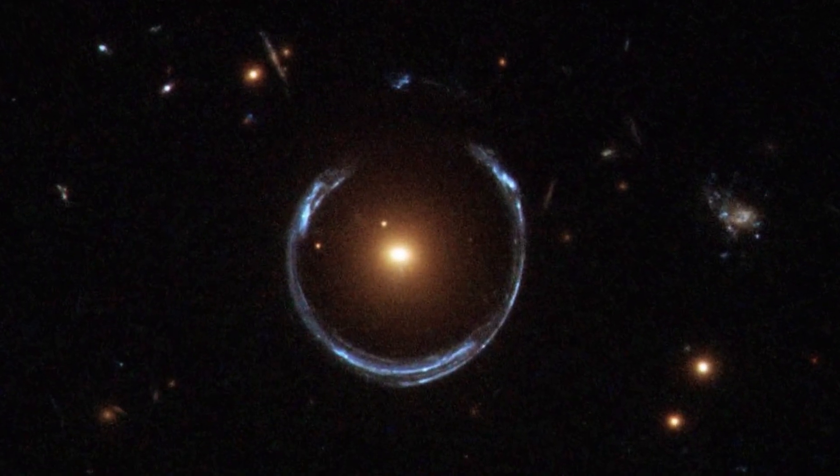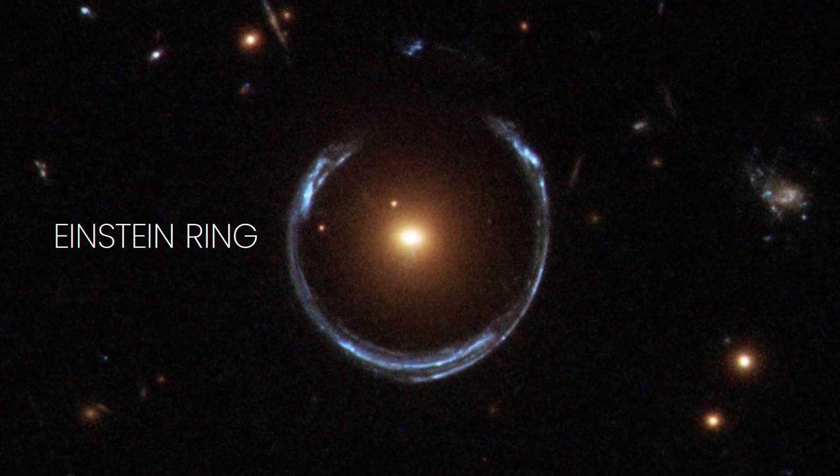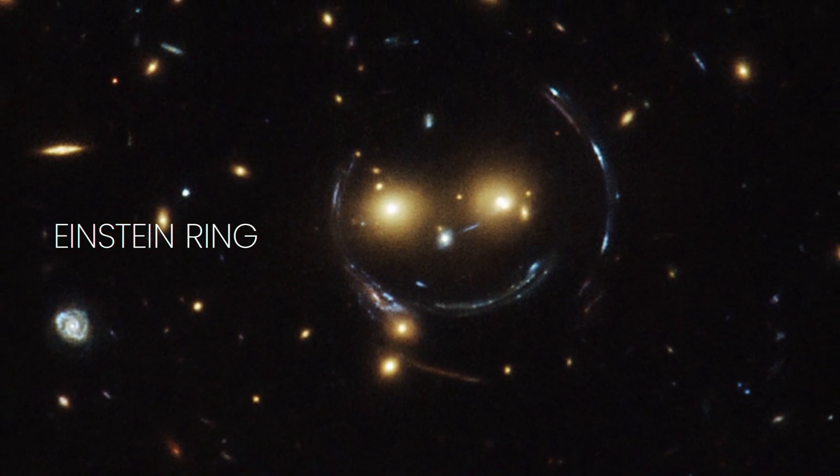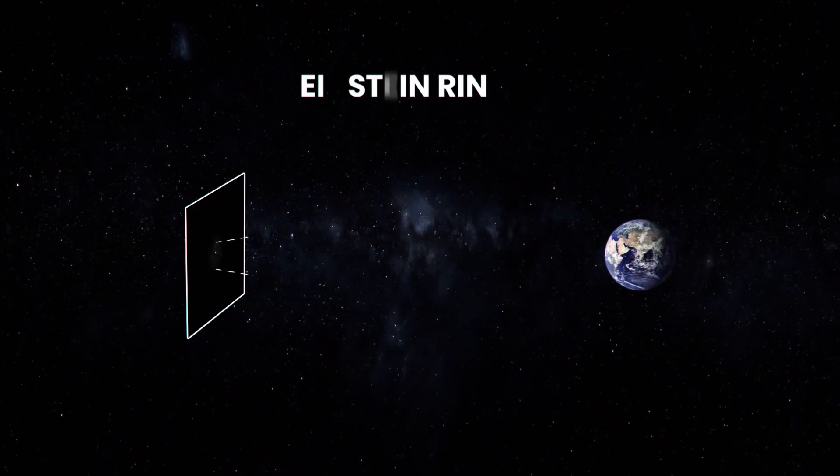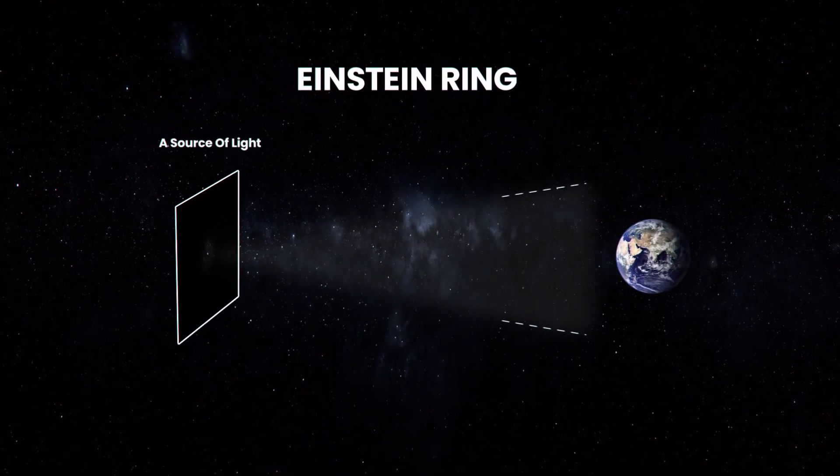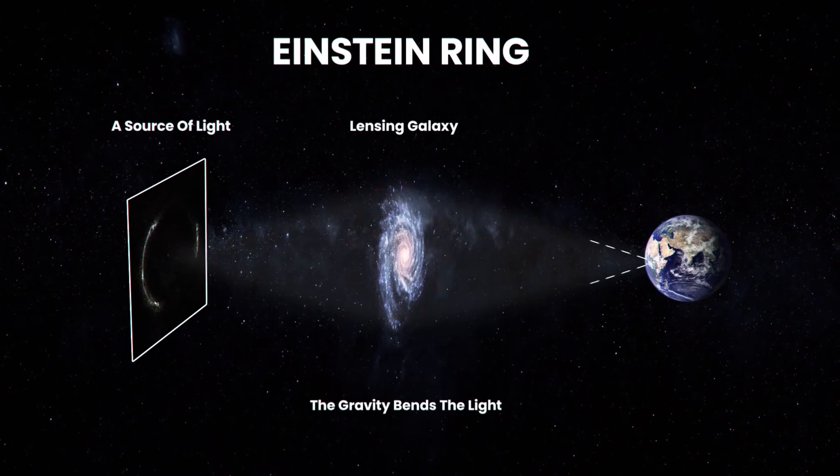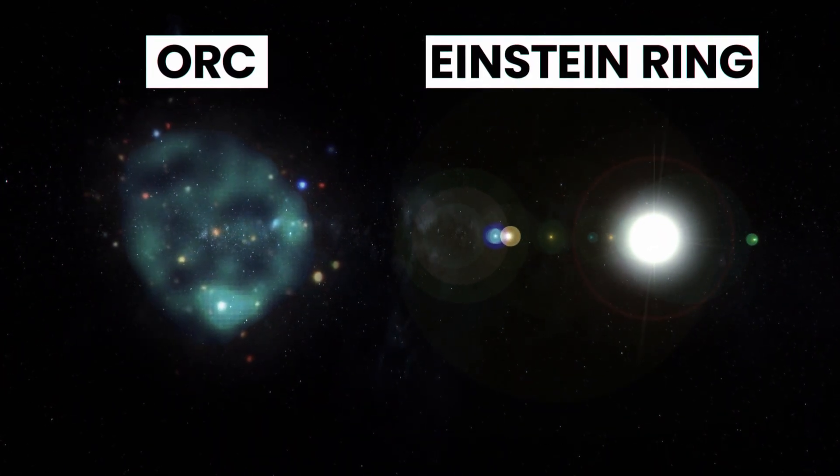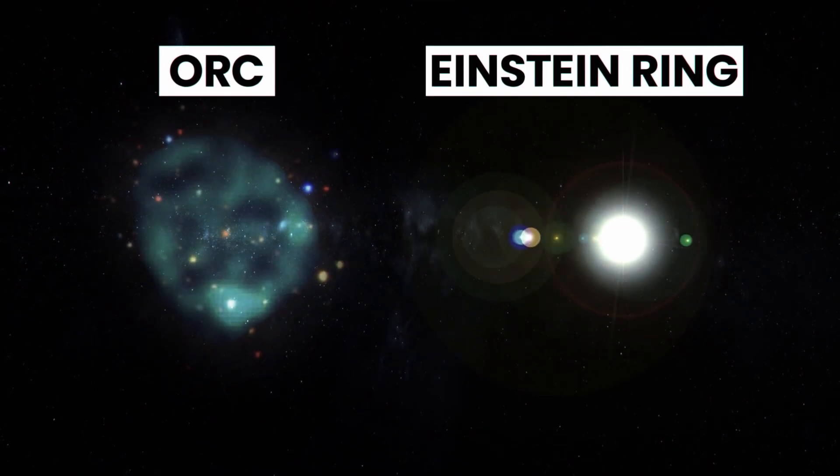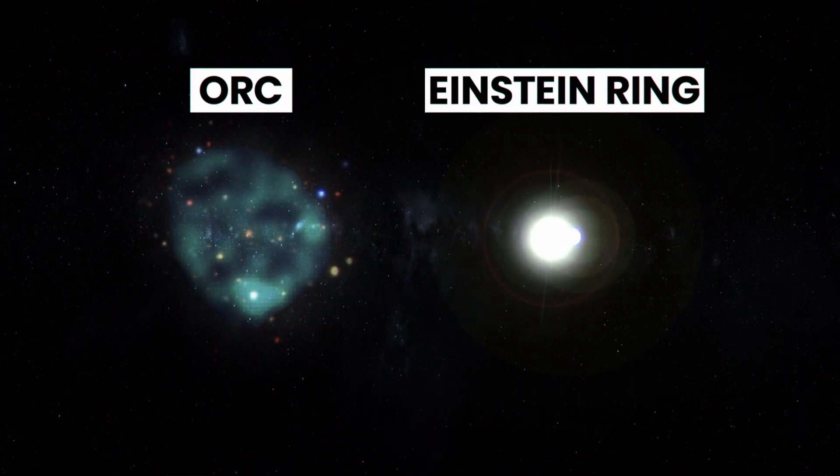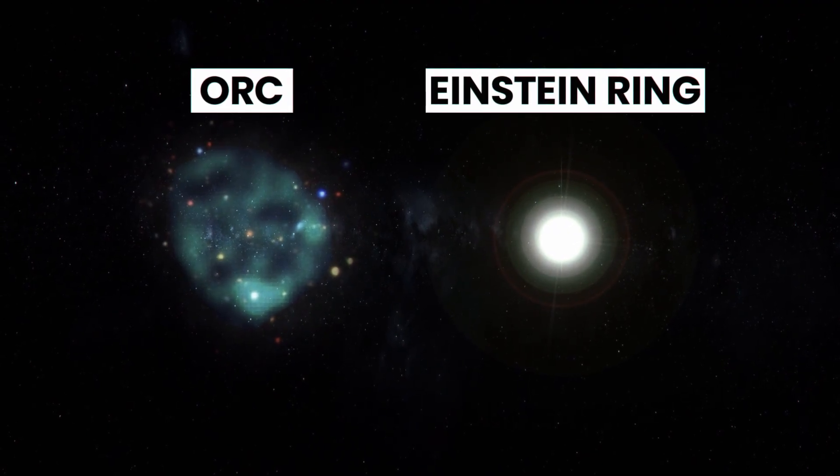The other possibility is that the circles are an Einstein ring, which is a gravitational lensing of background sources that produce arcs of emission. If a source, lens, and observer are aligned, then the lensed image can take the form of a so-called Einstein ring. But in the case of the ORCs, it's unlikely that such a lens would be sufficiently symmetric and perfectly aligned with the background source to produce the observed circular symmetry.